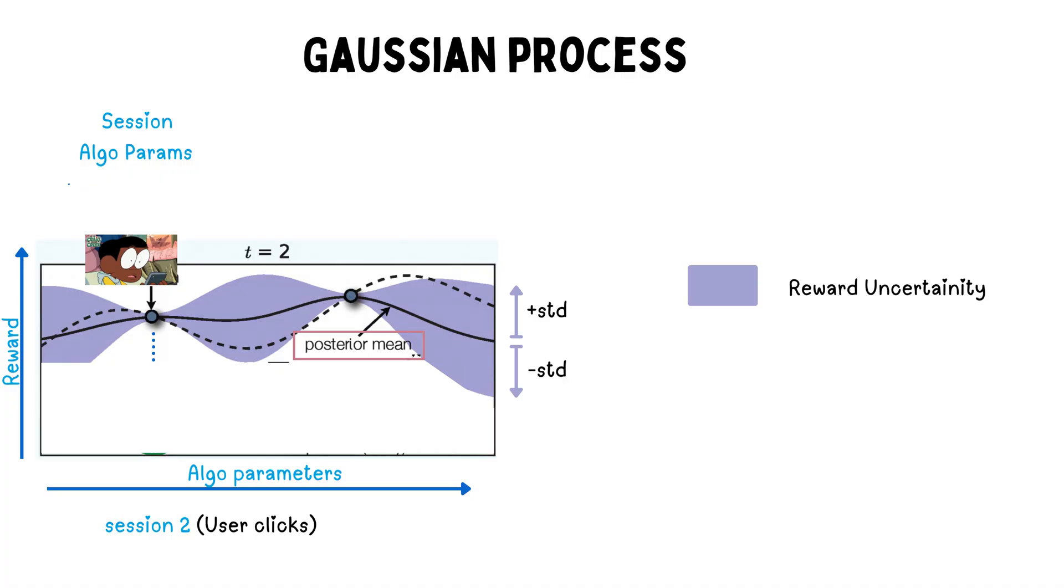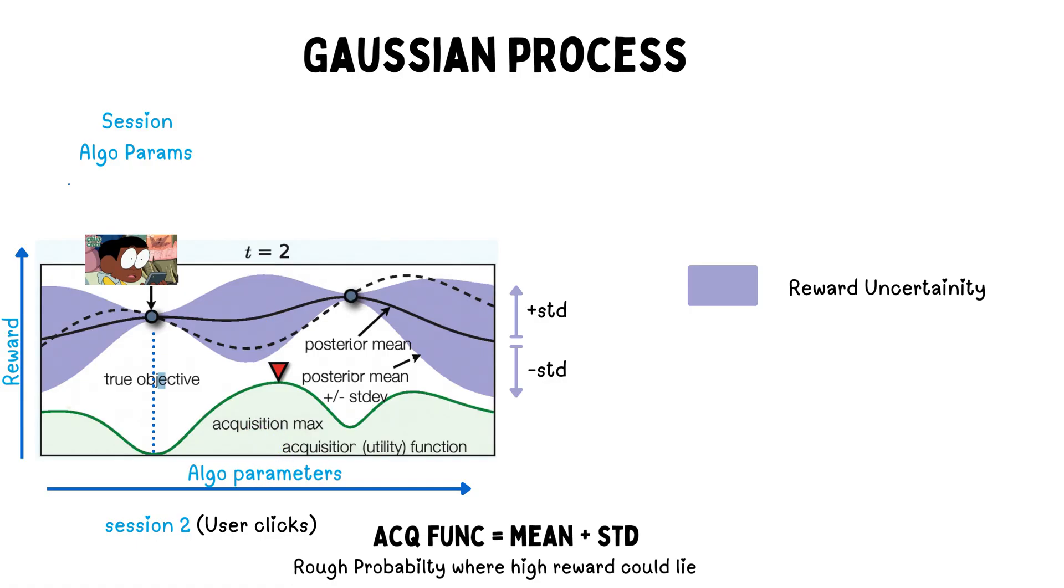The thickness of that purple region represents the standard deviation on both sides. Now we want to maximize the reward, so we pick a point where we have the highest mean plus standard deviation. This is a new function altogether and is called the acquisition function.